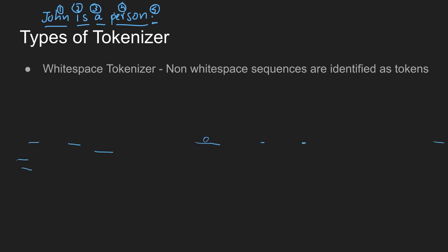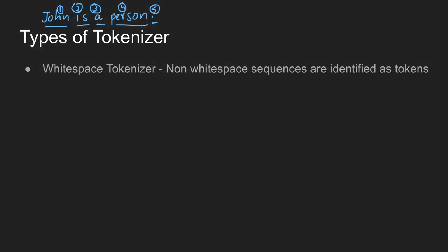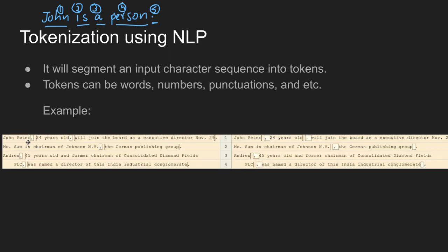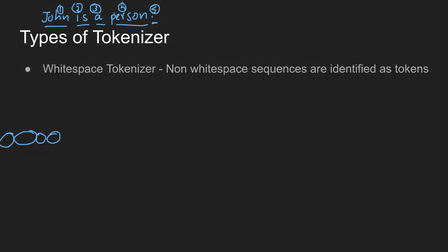What is a tokenizer? The first type is the white space tokenizer. A white space tokenizer splits a sentence by white space. For example: 'John Peter' — 'John' is the first word, 'Peter' is the second word, '24' is the third, 'at' the fourth word. The white space tokenizer simply splits on white space and splits the words.